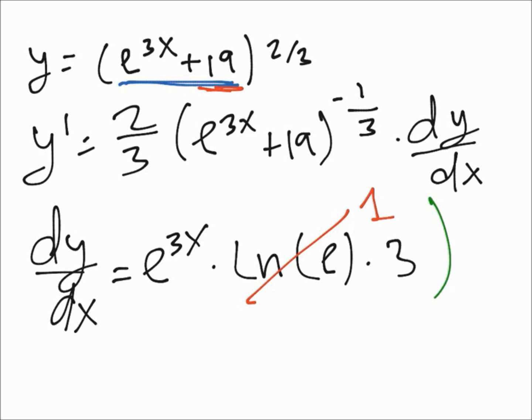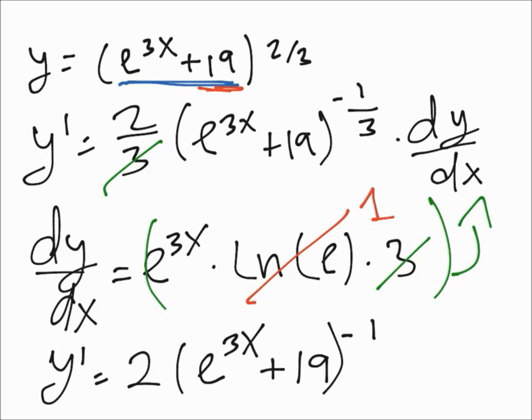And the final result will be y prime is 2 times (e^(3x) + 19)^(-1/3) times e^(3x). So they can get a little complicated, as long as you're able to separate and not confuse the functions you should be fine.